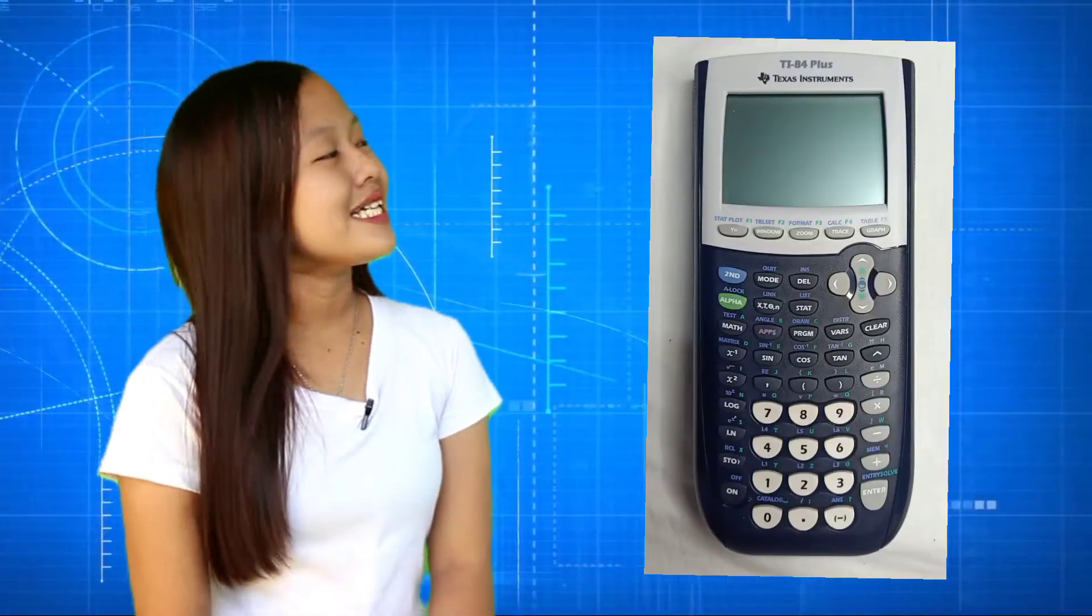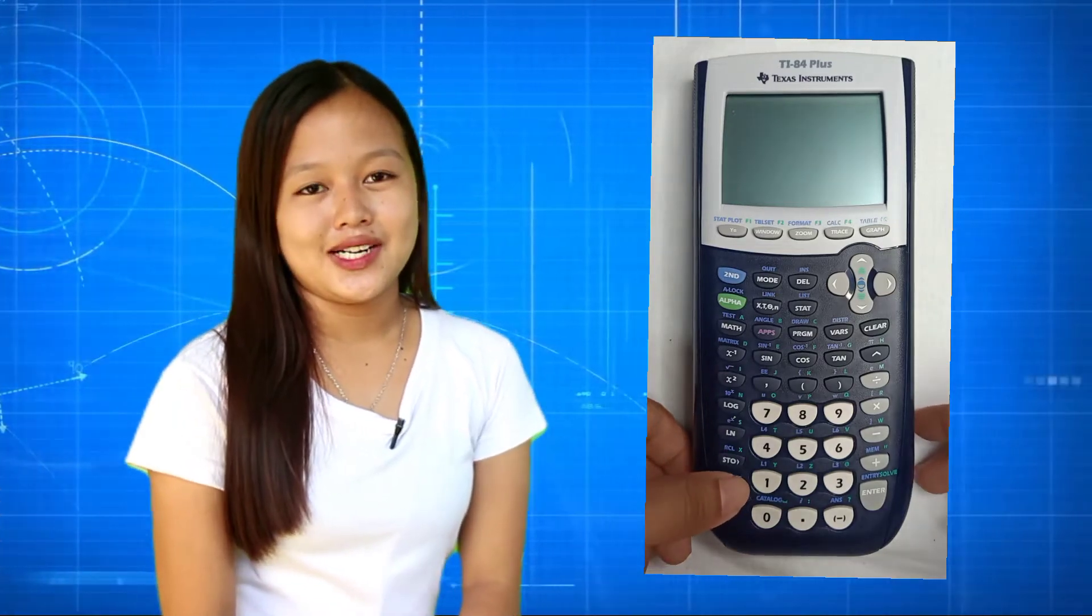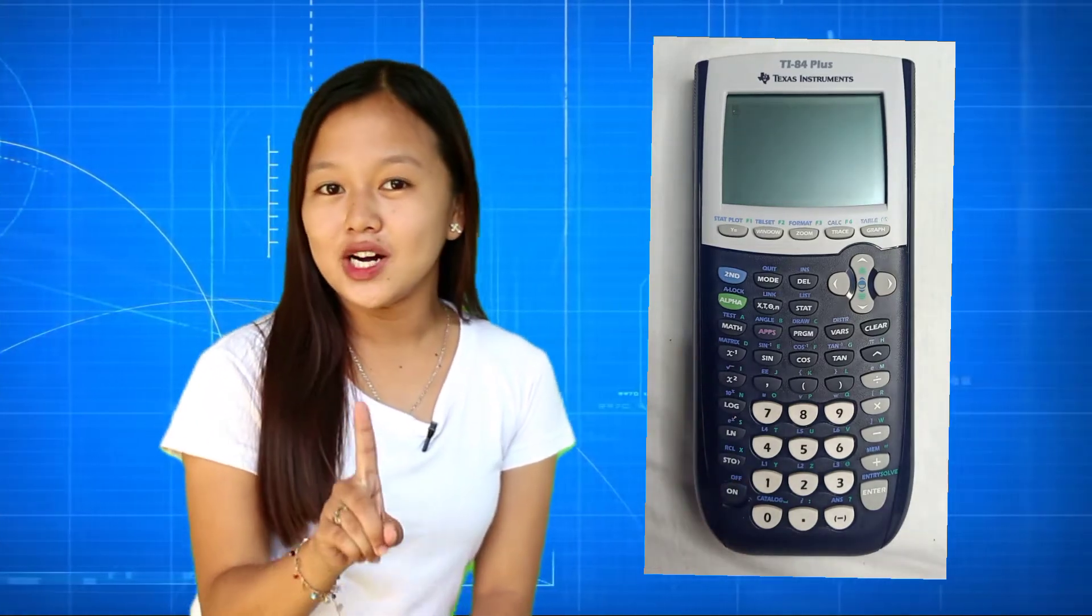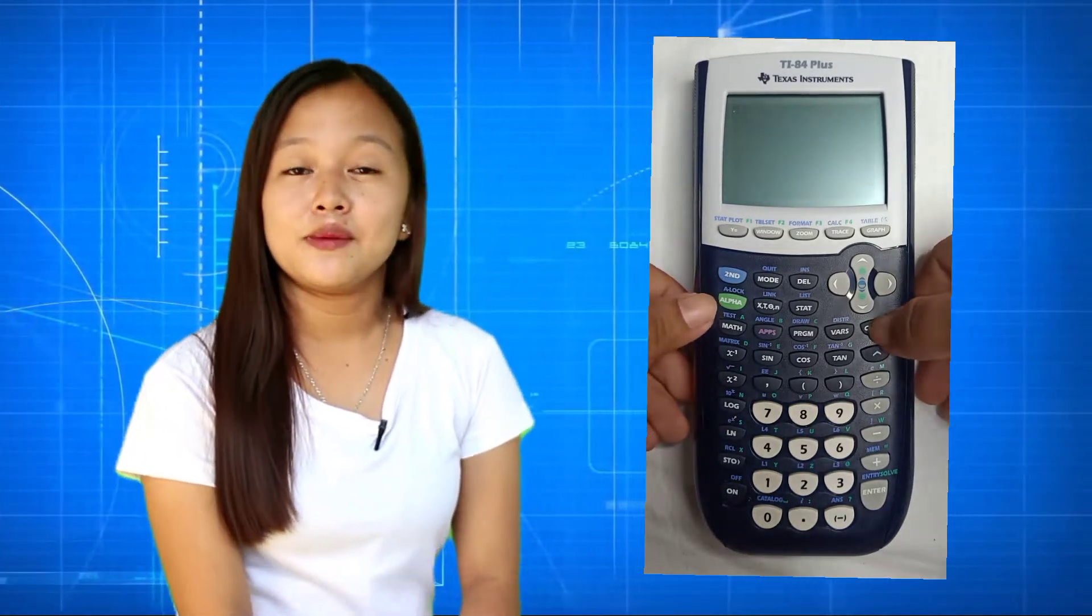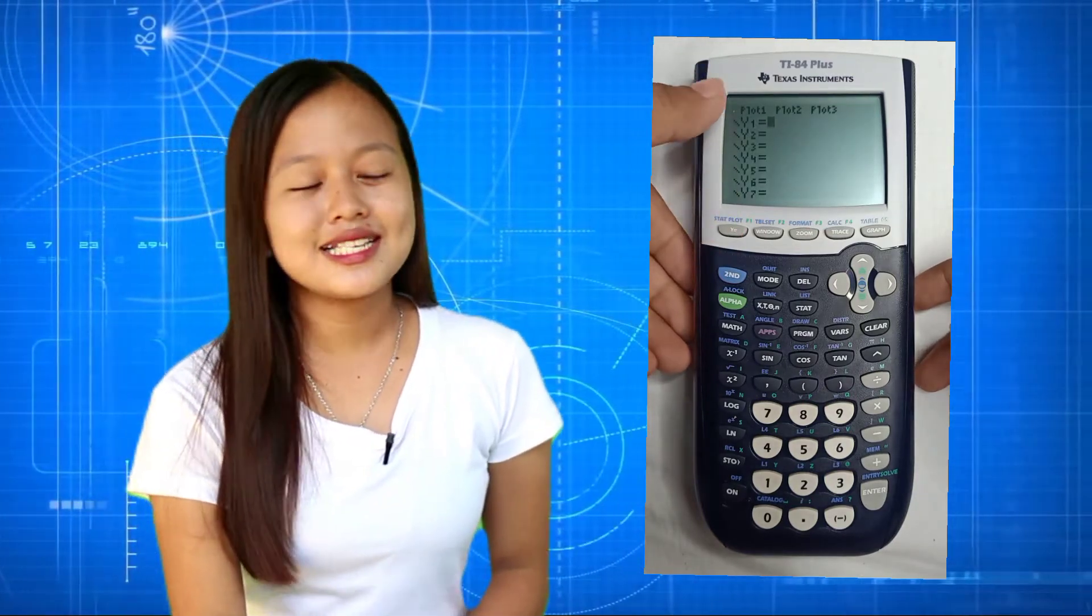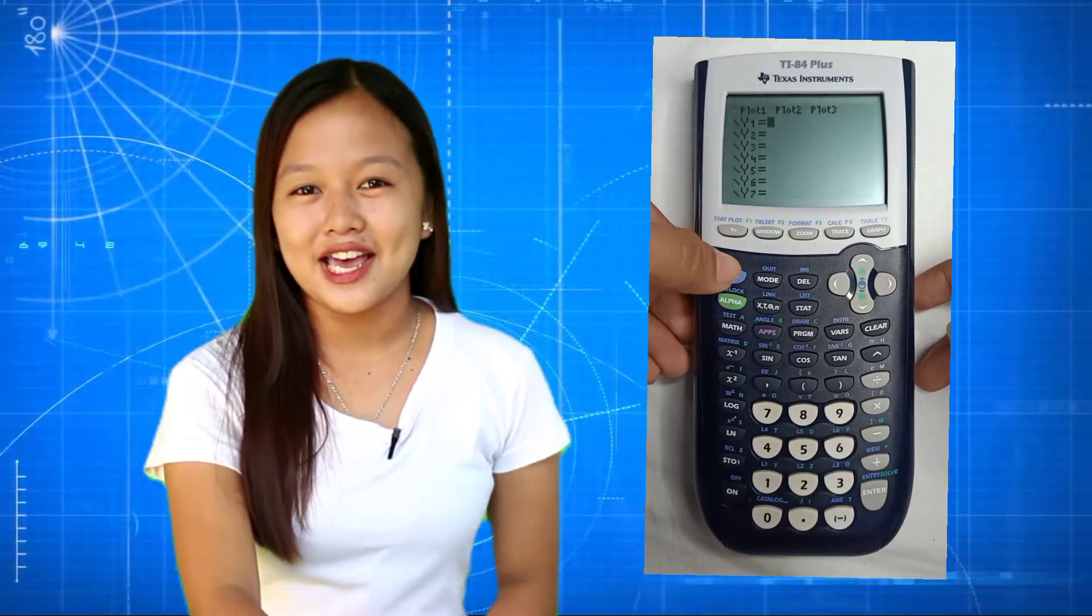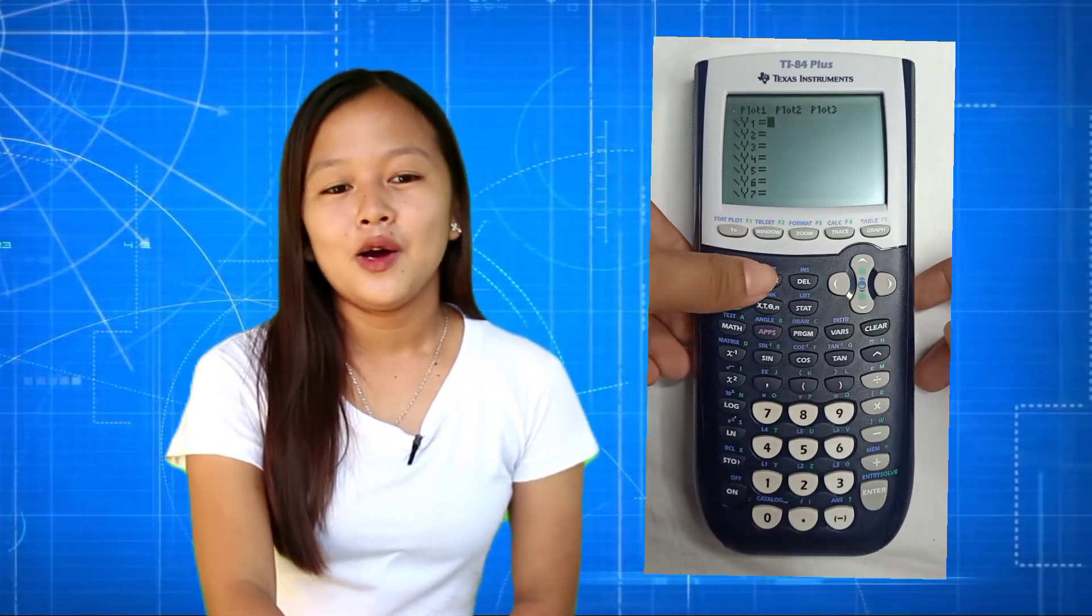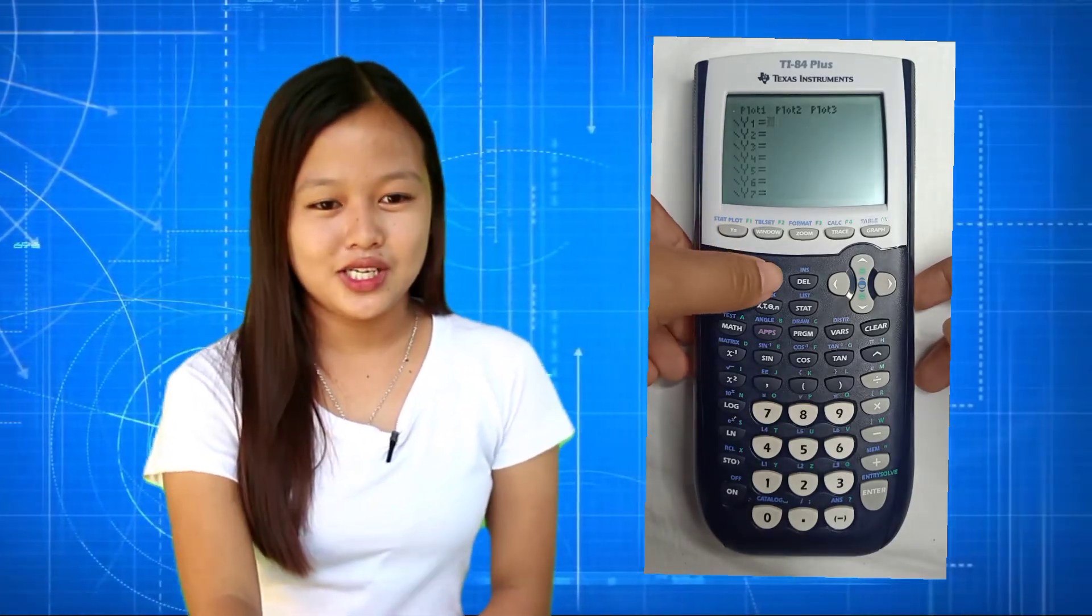To solve the given problem, we are going to use a graphing calculator. To start with, we need to set our calculator. Let's press the power on button. Then press clear to surely clear the previous calculations and data. Note that a polar equation we need to use R. Since our calculator are set for function problems, we need to set it for polar equation.